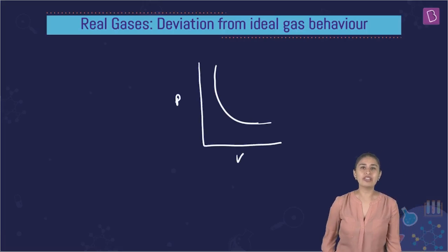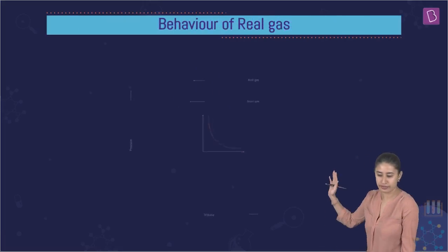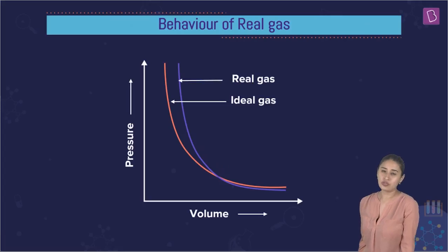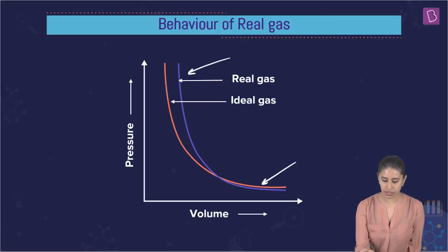Let's see what we found out experimentally. This is what we found when we plotted P versus V at a constant temperature. I'm sure something you can observe from this experimental curve for a real gas is the two curves are not coinciding. But yes, there is certainly one thing you can observe.